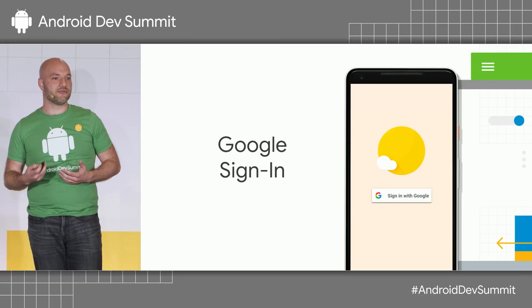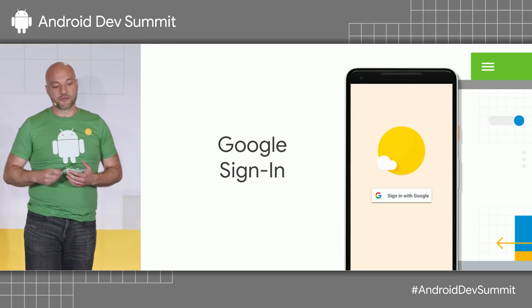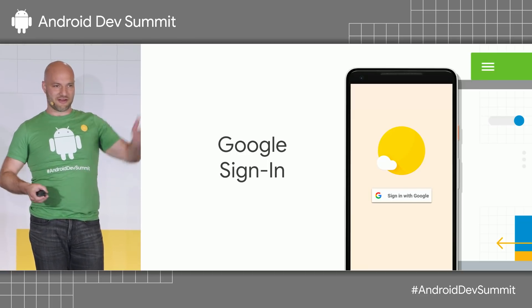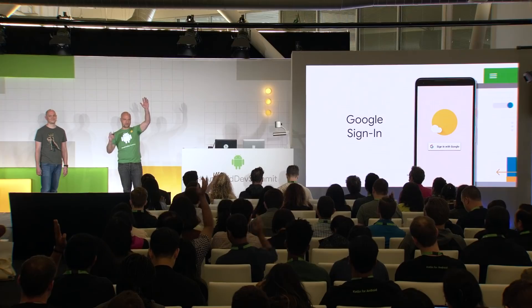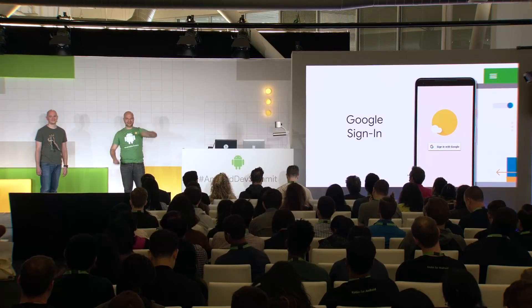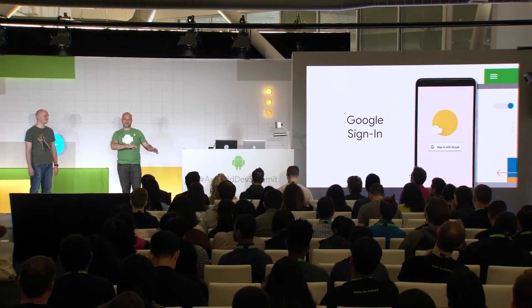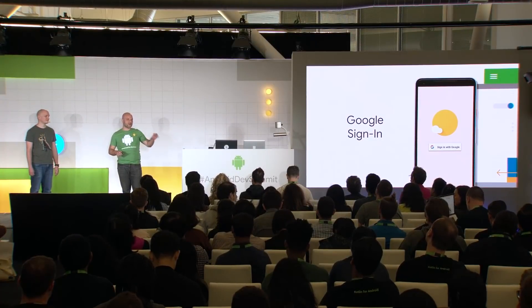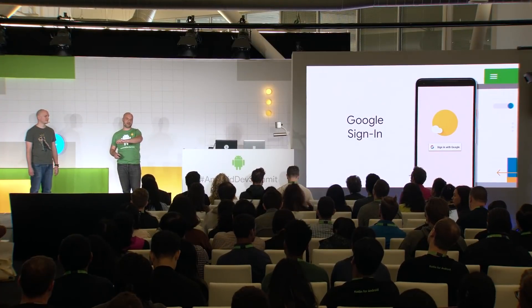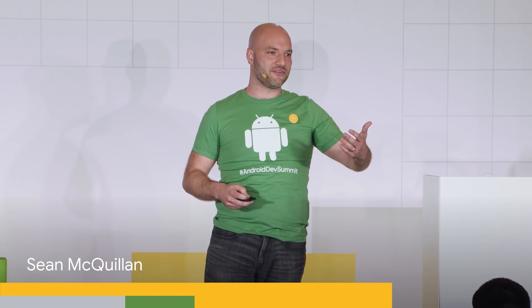There are a couple of products from Google that help you do this. One of them is Google Sign In — it's a button you press and you log in. It's amazing for this flow because it's very simple. It's good for your activation originally because it's easy to log in, but when users get a new phone, it's also good for reactivating them because all they do is click a button.